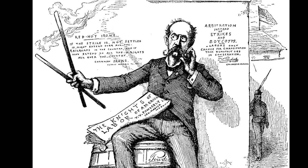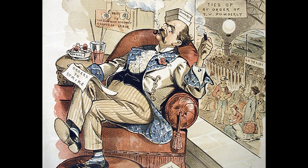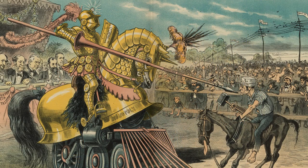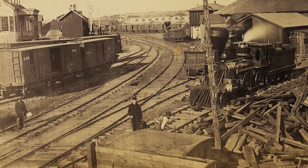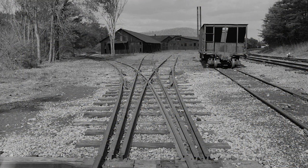Conservative newspapers depicted Powderly as a dangerous radical able to dictate to the nation using the threat of strikes, and public opinion was turned against the organization. Following Gould's example, other companies refused to bargain and strove to destroy the Knights' influence. In the next few years, dozens of strikes were crushed, and many workers lost faith in Powderly and his federation.